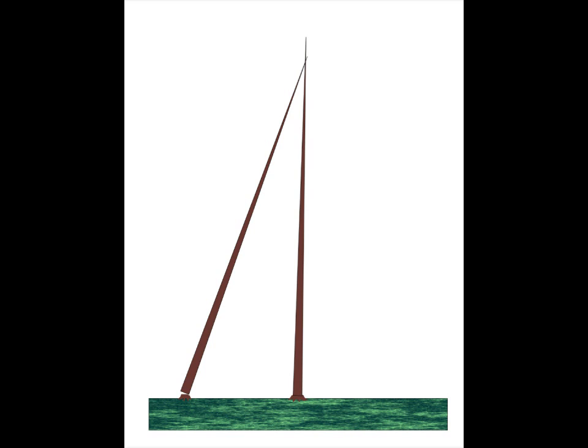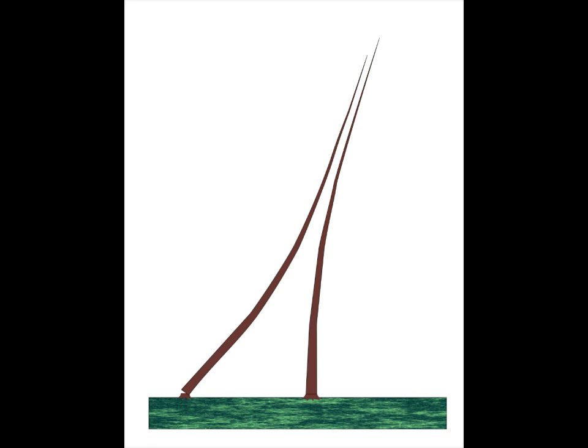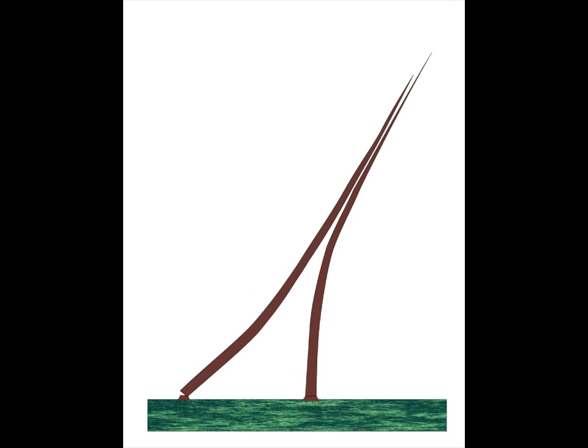First, tree A begins to fall, but makes contact with a similarly sized tree B. With its momentum still moving forward, tree A begins to bend. Feeling the load from tree A, tree B also begins to bend. As tree A continues to fall, and both trees continue to bend, a huge amount of spring energy is built up.